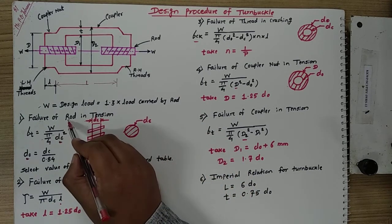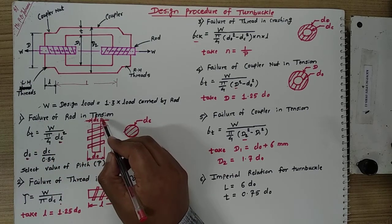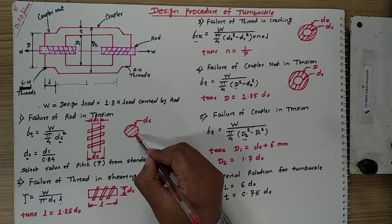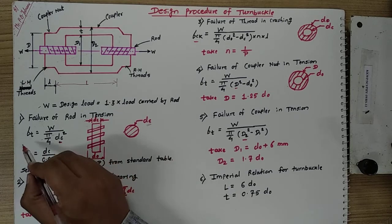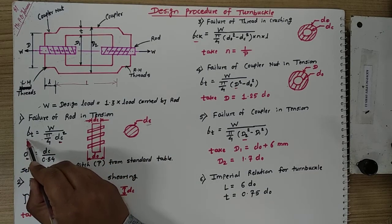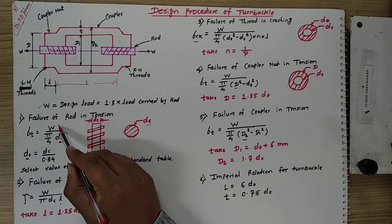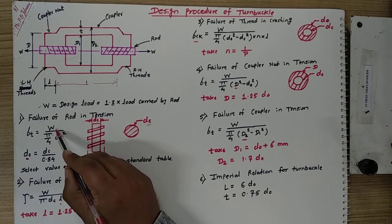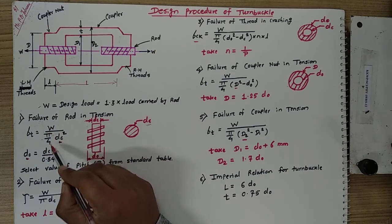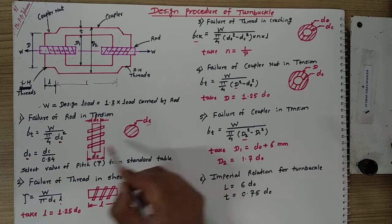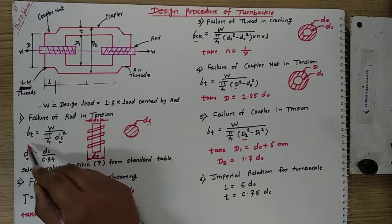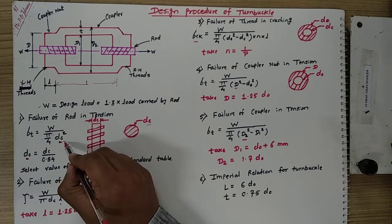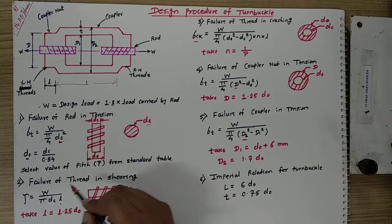Whenever the rod fails under tension, maximum failure occurs at the core section DC. The tensile stress sigma T is equal to load upon area, where load is W and area is the circular area: pi by 4 times DC squared. From that equation we calculate the value of DC, the core diameter of the screw.